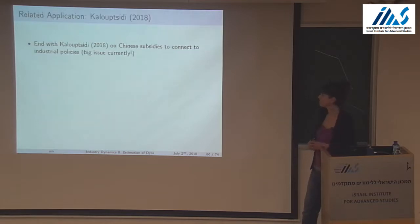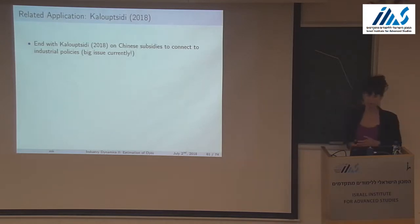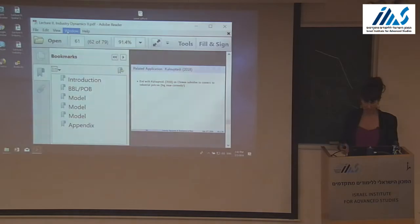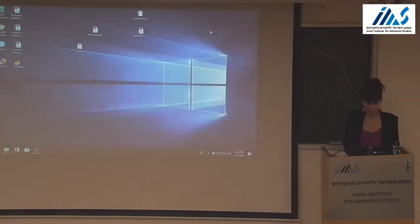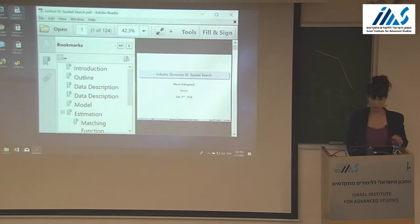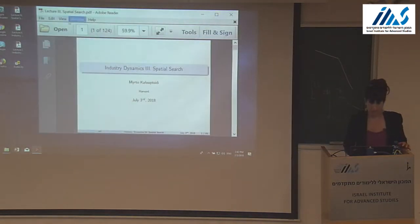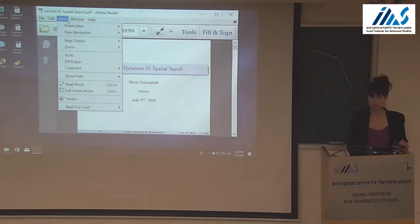That's a very brief overview of the types of things you can do with this model. I was going to talk about one paper on Chinese subsidies and industrial policies, very relevant these days, and talk a bit about dynamics on both demand and supply. If a miracle happens and we have time at the end, I will talk about it. Any questions before I switch topics?